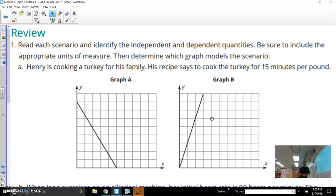We're going to the next page. And we're going to review one, two, and three. This is really a review of what we did the day before. We talked about independent versus dependent variables or quantities. Read each scenario and identify the independent and dependent quantities. Be sure to include the appropriate units of measure, then determine which graph models the scenario. So it seems like I have three things to do. Independent and dependent labeling, figure out what unit of measure is needed, and then lastly, is it graph A or is it graph B that completes this first scenario?